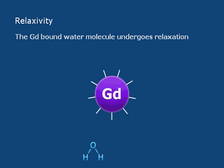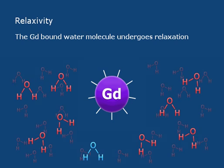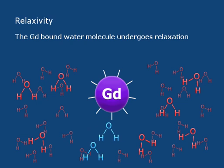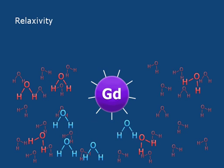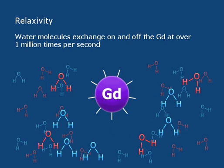Now, that's only one water per gadolinium. But another great thing about gadolinium is this water only stays on the gadolinium for a very short time — under a microsecond. And so that water molecule is relaxed, another one comes in and takes its place, and then that gets relaxed. This goes on at about over a million times per second. So the net effect is that one gadolinium ion can relax about a million water molecules in a second.